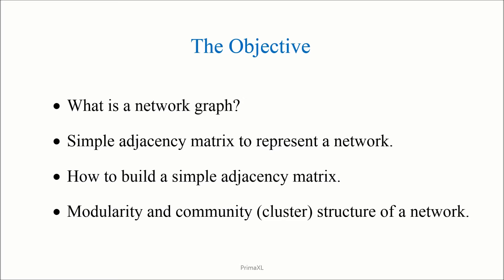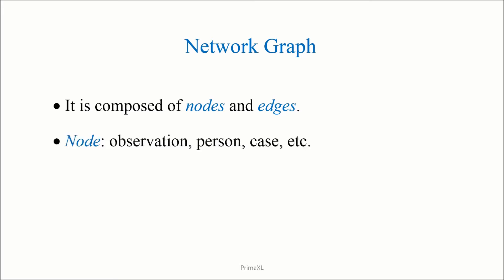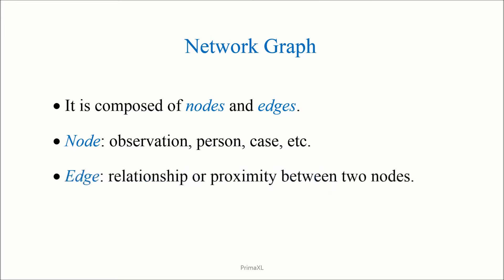Today's episode is mostly about the basic concepts. A network graph is composed of nodes and edges. A node can be an observation, a person, or a case. There is great flexibility in representing a node, as we can see in some examples here. An edge represents the close relationship between two nodes. As you can see, an edge is usually drawn as a line connecting the nodes pairwise.